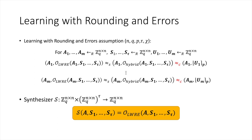The PRF implied by this synthesizer is our final low-depth PRF. There is a domain mismatch—the synthesizer takes one matrix A and tau matrices S1 through S_tau to produce a single square matrix in Z_Q—but this is a minor technicality that can be addressed in multiple ways, and I refer to the paper for the details.